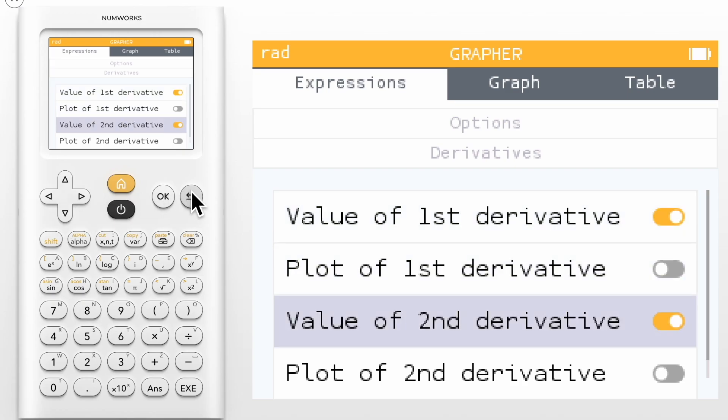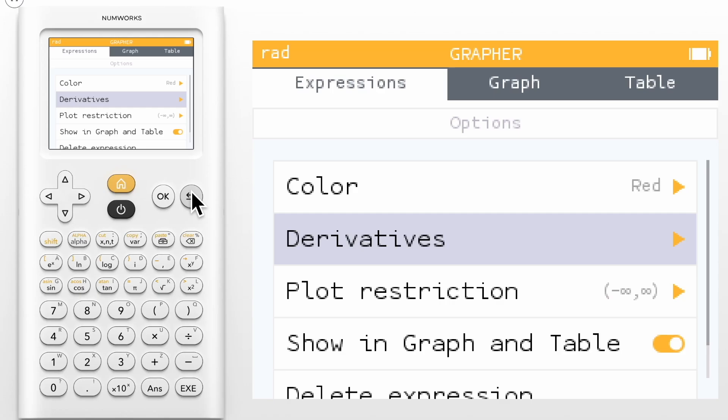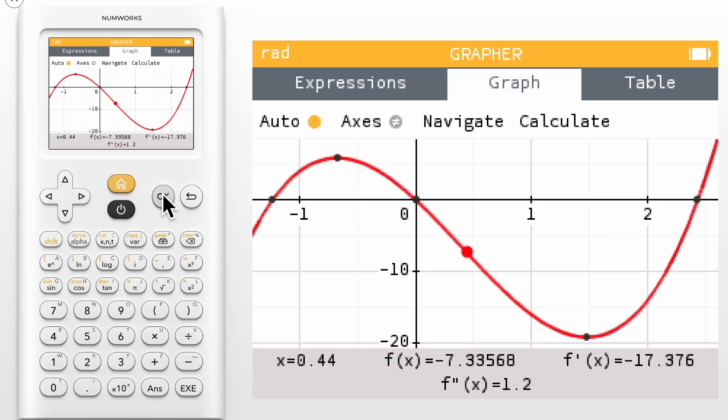Now that we have these values toggled on, let's navigate back into the graph tab. The bottom banner will now display the first and second derivative values as you trace your graph. The table will also display columns for these values.